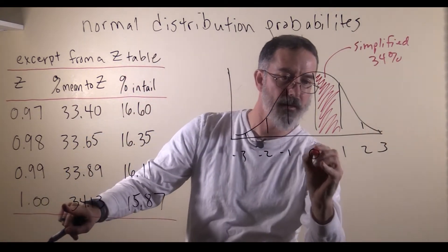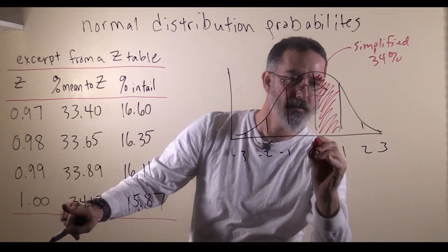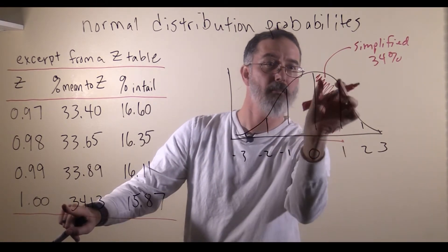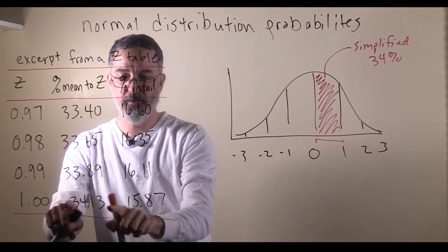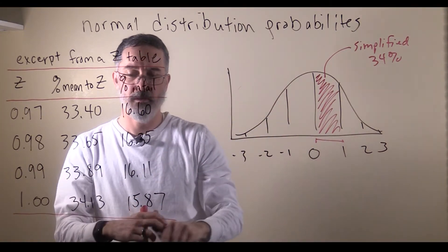So the percent in between the mean and the z of 1, that is the exact same area we had before, that percent is actually 34.13.